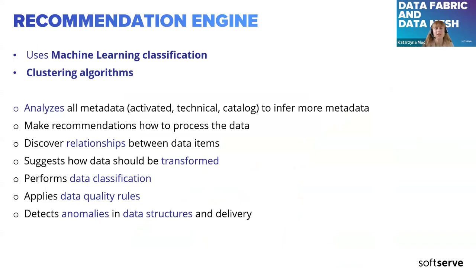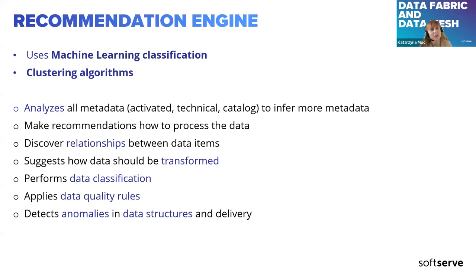The recommendation engine is also one of the key components, mainly utilizing machine learning classifications and clustering algorithms. It analyzes metadata in depth to infer more metadata from existing metadata. It is used for making recommendations about how to process current data, discovering relationships between various data items, and suggesting how data could be transformed. It also performs data classifications, applies data quality rules, and detects anomalies in data structures.